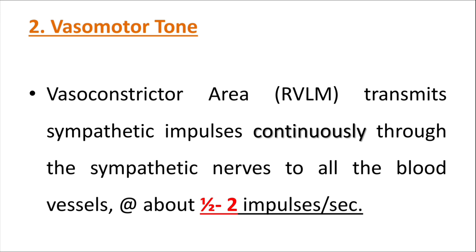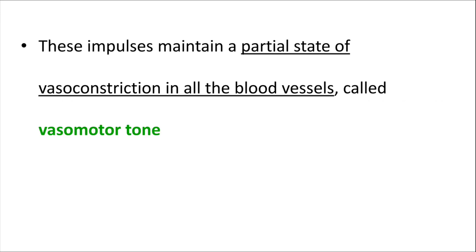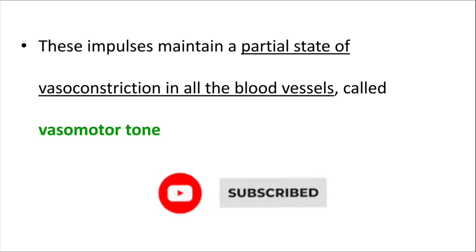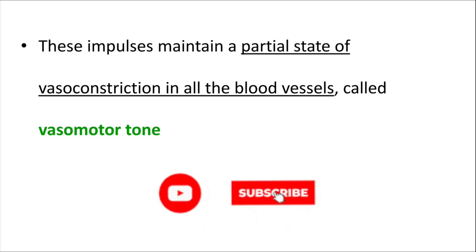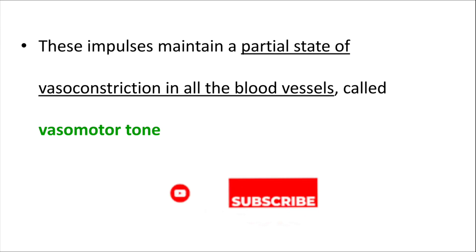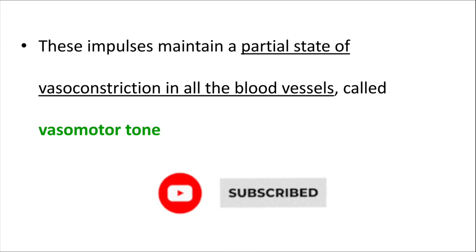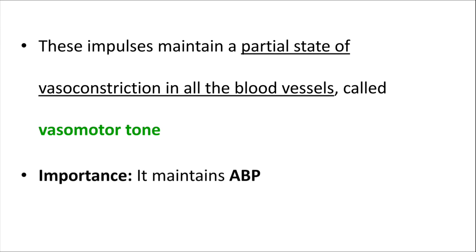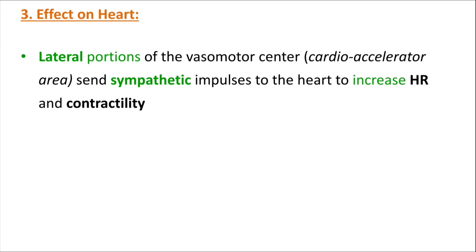The RVLM transmits sympathetic impulses at a rate of about one-half to two impulses per second. These impulses maintain a partial state of constriction of all blood vessels, which is called vasomotor tone. All blood vessels remain partially constricted due to the influence of the vasoconstrictor area. This vasomotor tone is very important in maintaining blood pressure.